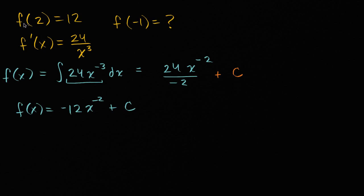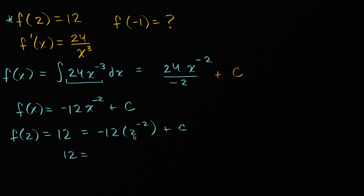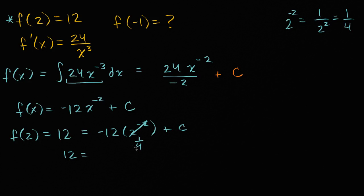How do we figure out that constant? They've told us that f of two is equal to 12. So: 12 equals negative 12 times two to the negative two plus C. Two to the negative two is one over two squared, which equals one fourth. So this is negative 12 times one fourth, which is negative three. So 12 equals negative three plus C. Adding three to both sides gives us C equals 15.